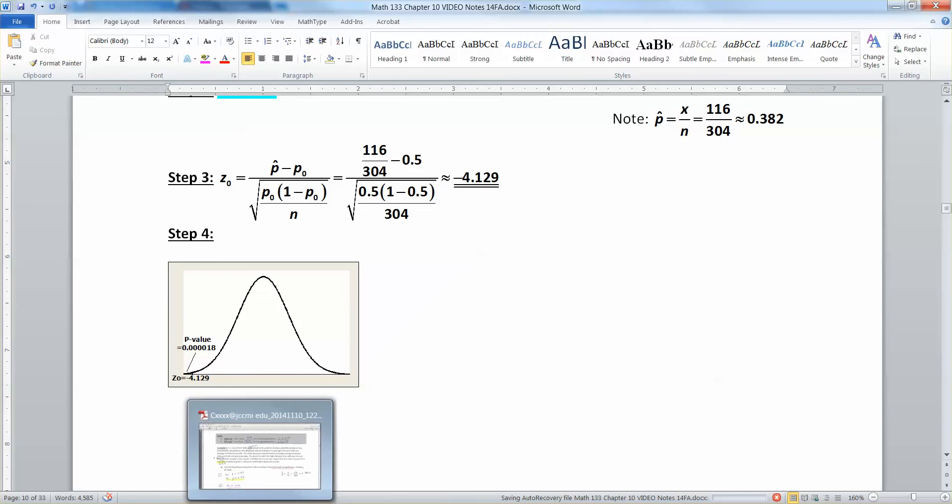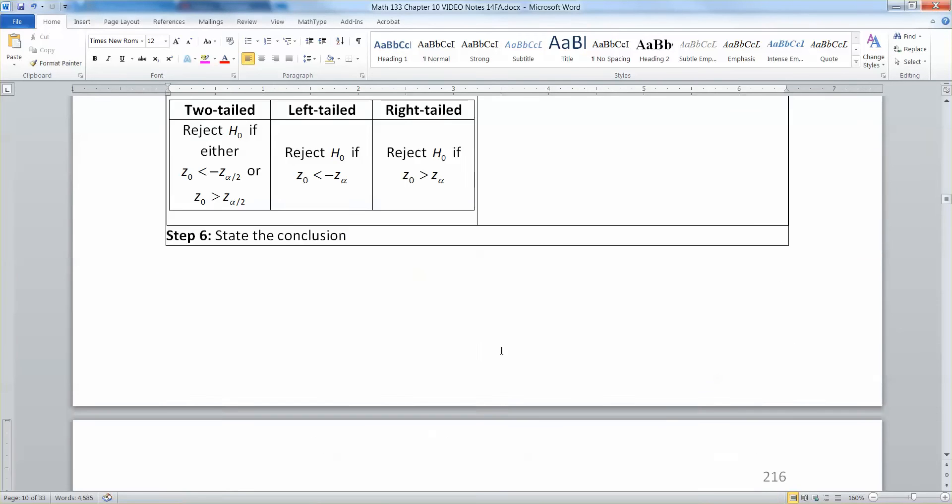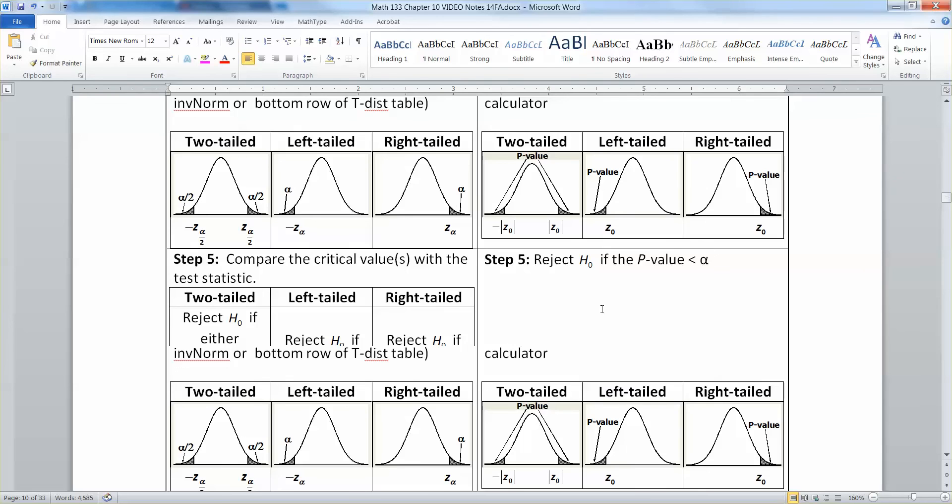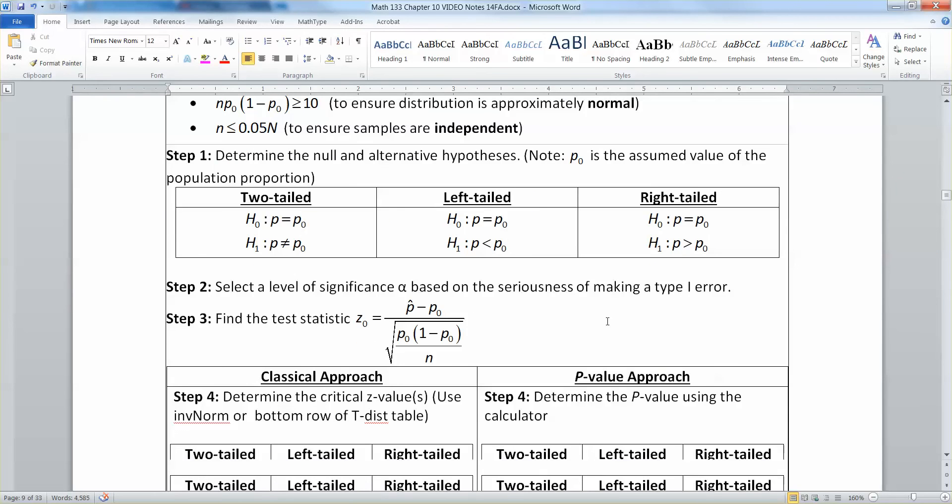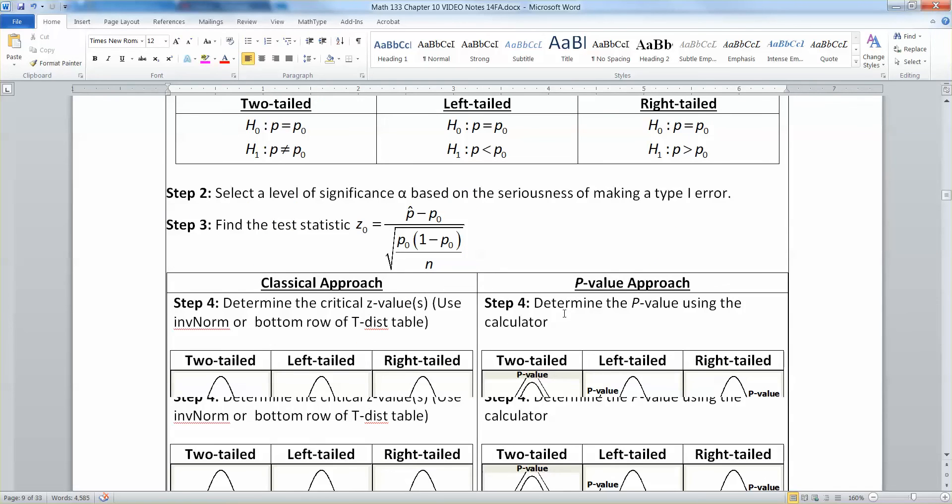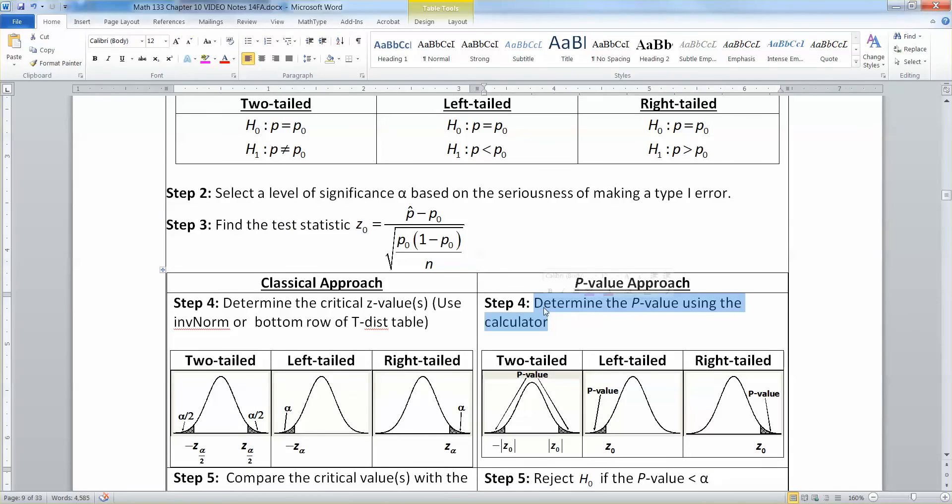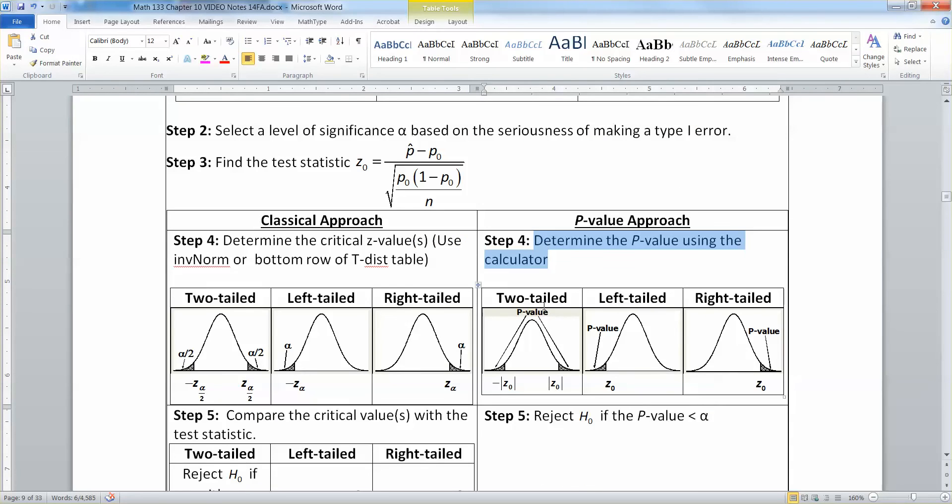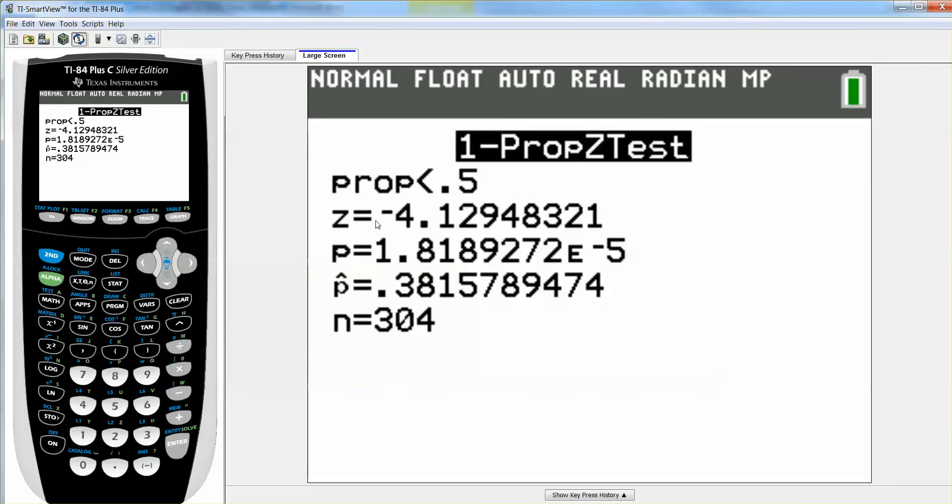Now, where did I get the p-value from? Well, the p-value comes from the calculator. Let me show you. I remind you of that fact right here. Determine the p-value using the calculator. See it right there? Okay. So, you're going to get it from the calculator when you run it. So, let me look right here.